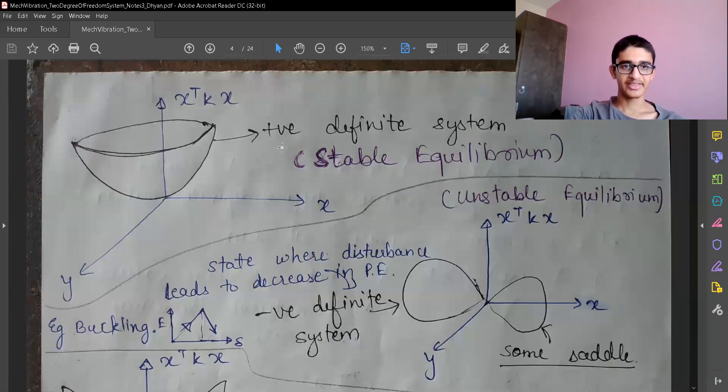Let's start with understanding the positive definite system. This is always going to be positive. This is one representation for the positive definite system. These are X, Y values and this is X transpose KX. This can be understood as a stable equilibrium from physics point of view.